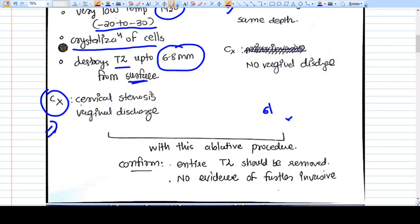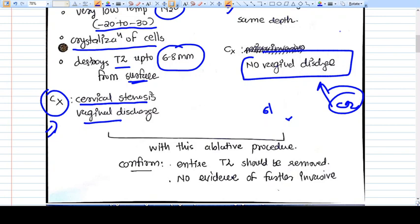There are some complications with the cryosurgery - these are cervical stenosis in future and vaginal discharge. But with the CO2 laser there is no vaginal discharge. The CO2 laser is a preferable method for ablative procedures.